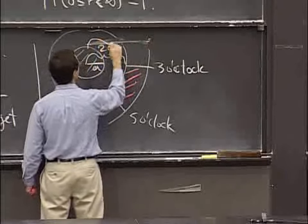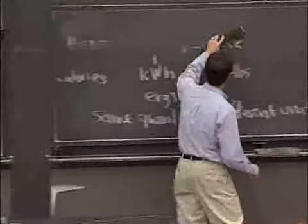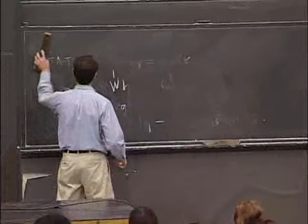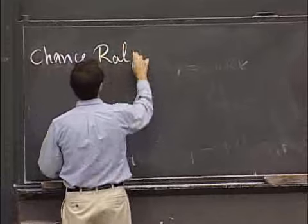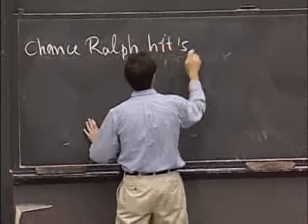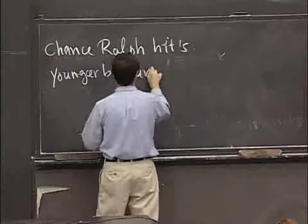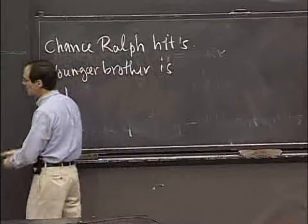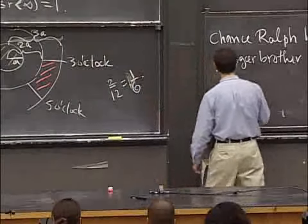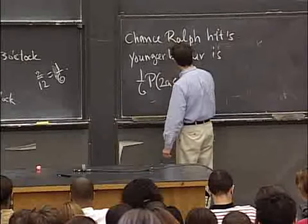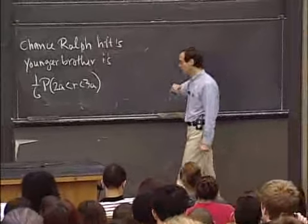So the longest distance is 3a. So in other words, what I'm saying is that the probability, if you're standing too close, the chance Ralph hits younger brother is about a sixth, right? Because 2 over 12 is equal to a sixth. A sixth of the probability that we're between a and 3a. All right? That's the number that we're looking for.